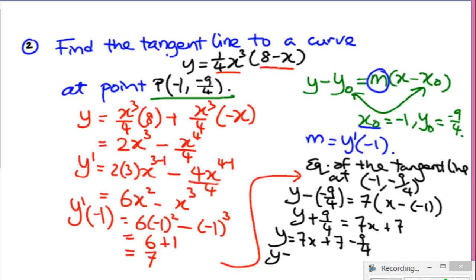That becomes y equal to 7x plus 28 minus 9 over 4, because 7 is 28 over 4. So the answer here is 7x plus 19 over 4. Here's the equation of the tangent line.